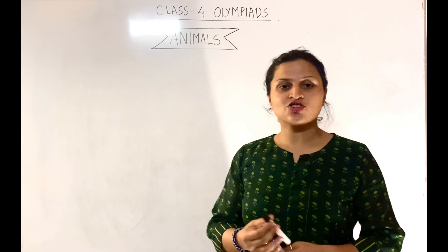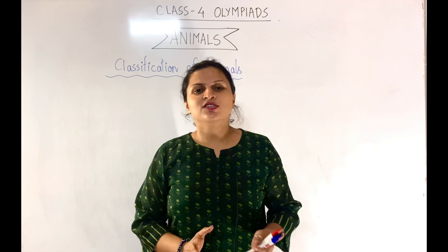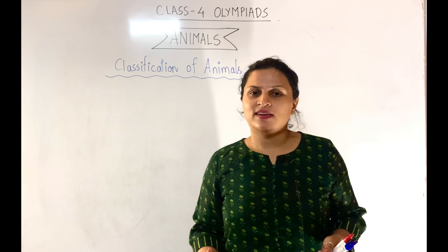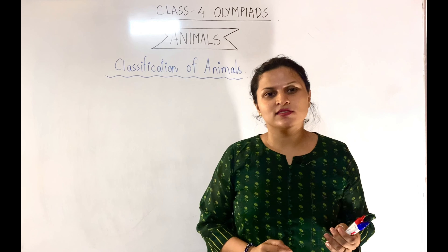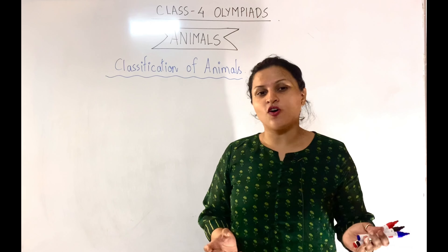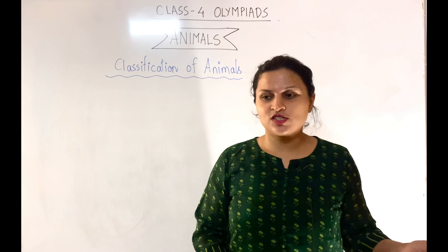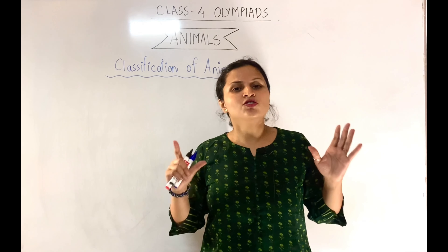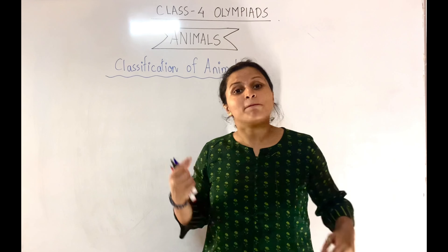Next, we are going to look at classification of animals. All the animals you see around you — the different birds, snakes, alligators, monkeys, dogs, cats, frogs, fishes, cockroaches, different types of worms, octopus, prawns, jellyfish, starfish, sponges — all these animals can be broadly divided into two categories on the basis of whether or not they have a backbone.